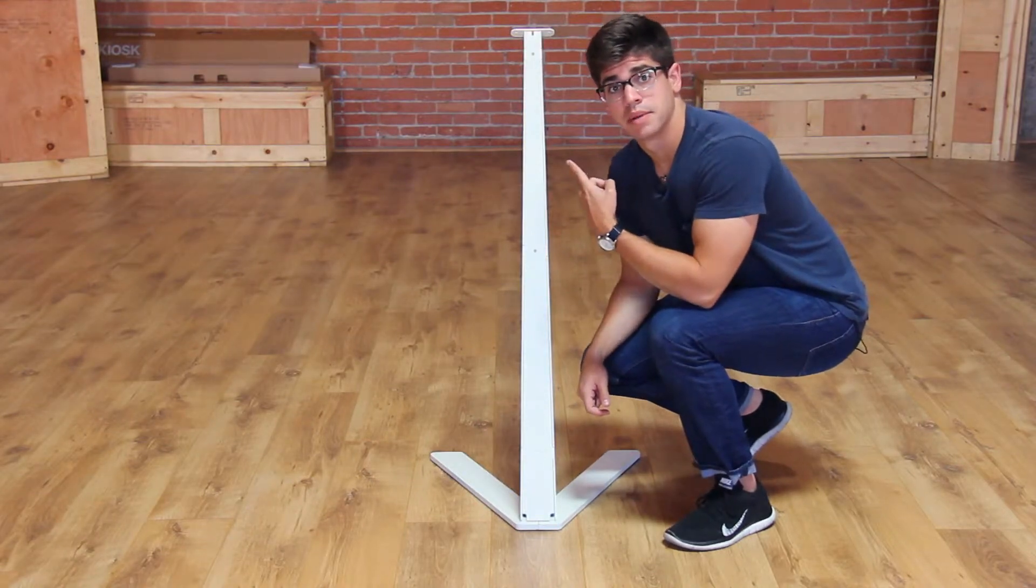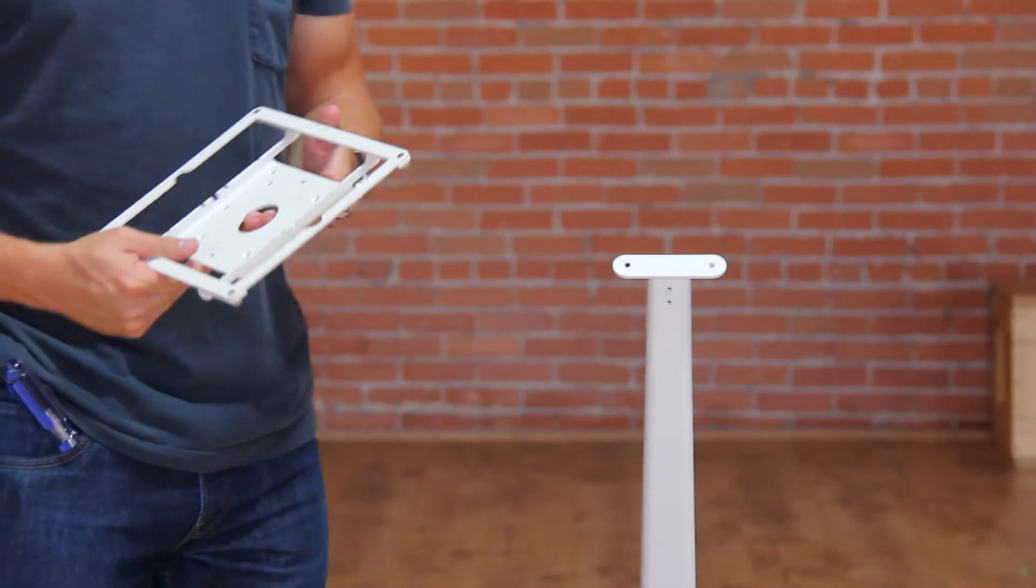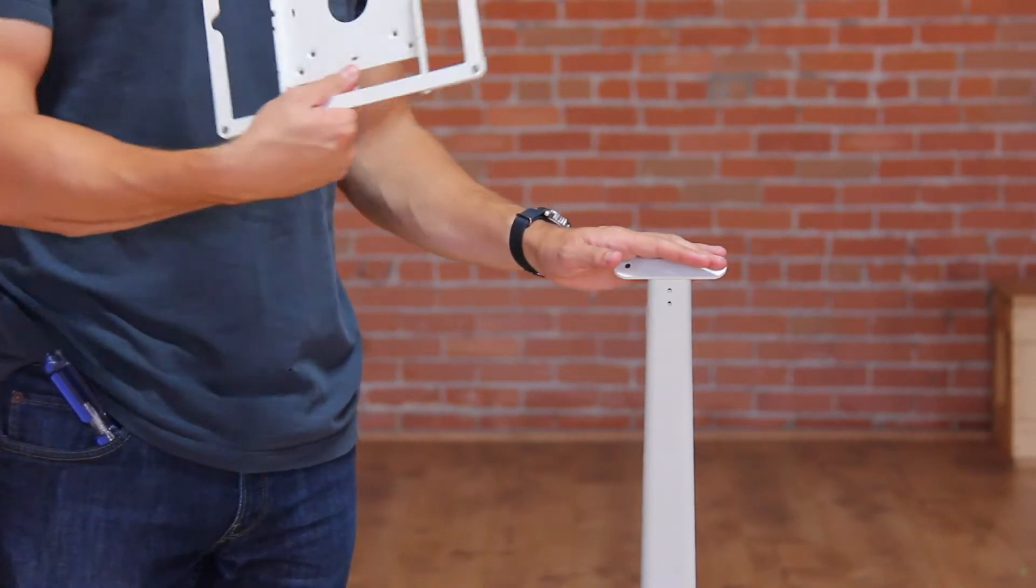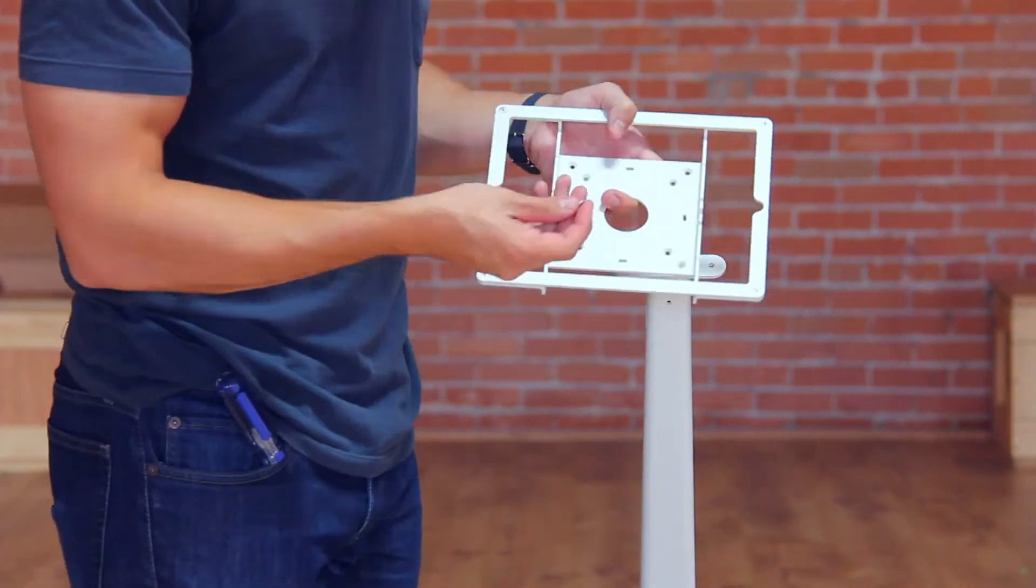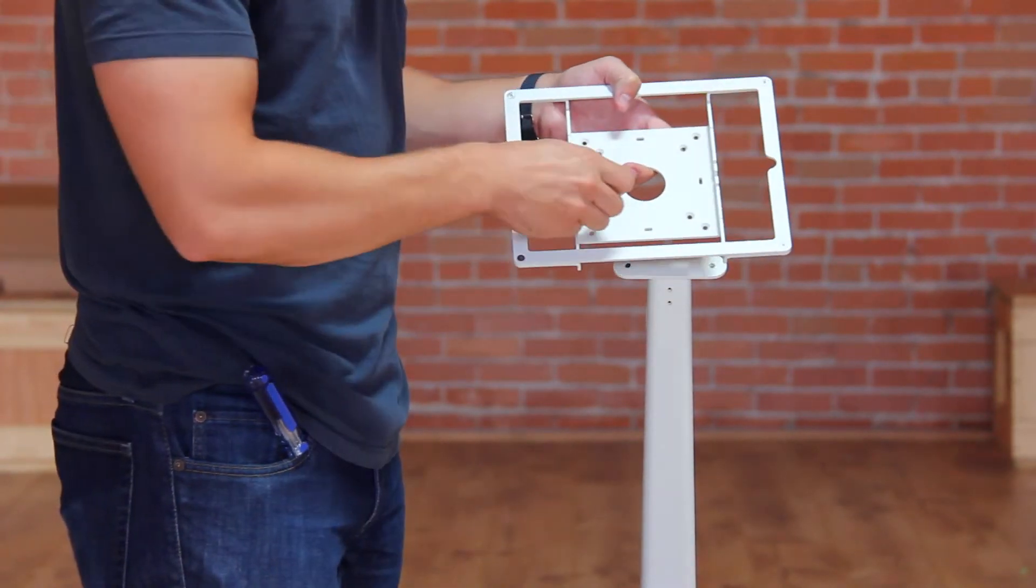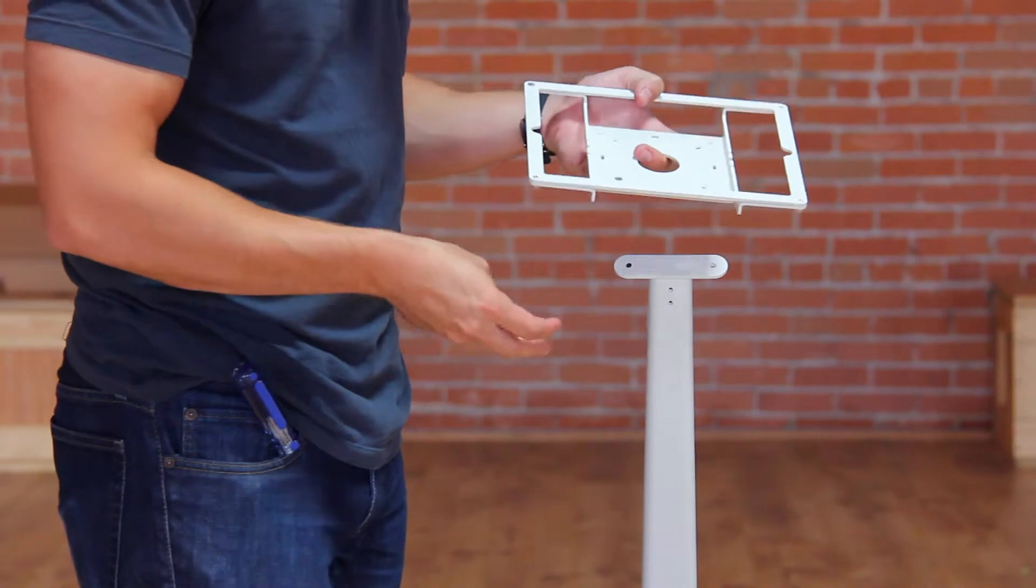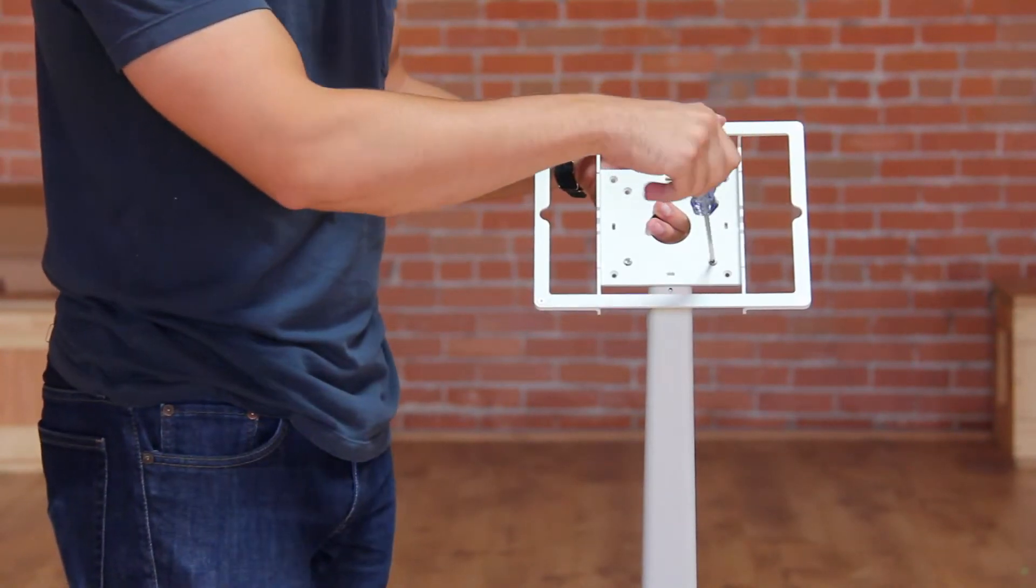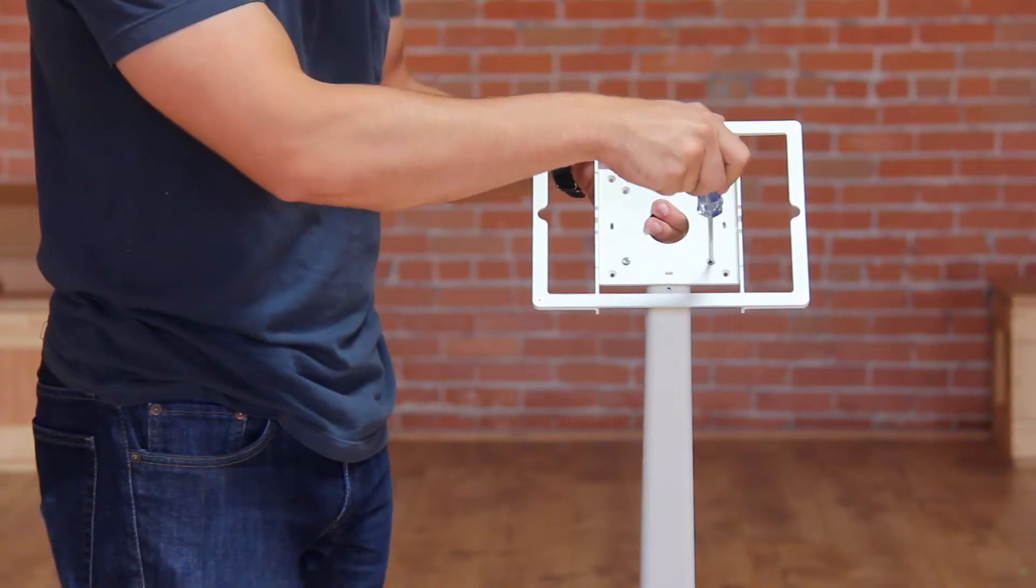Next we're going to install our tablet frame to the top of the kiosk. So once we have our neck assembled to our feet of our kiosk, we're going to take our frame of our tablet that we're going to install. We're going to take the M4 mounting screws for the frame and put them into the desired hole slots. We're going to need a Phillips head screwdriver. We're going to screw the mounting screws into the mounting holes in the kiosk.